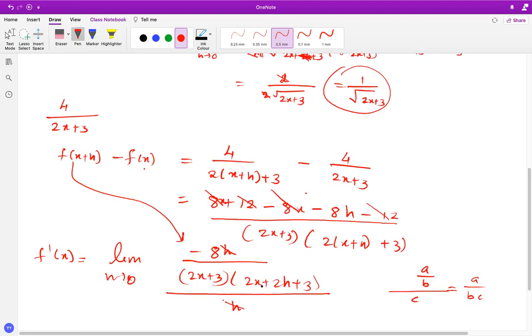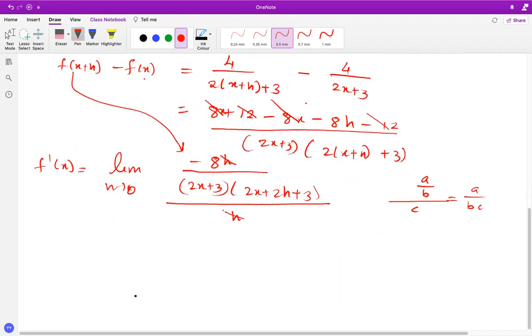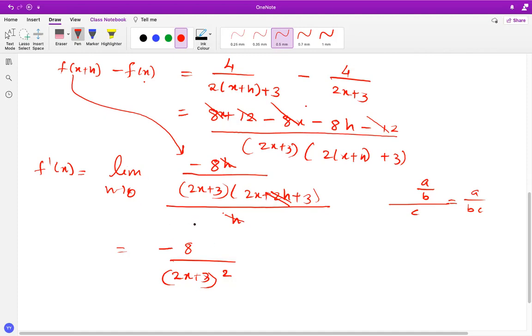Now you plug h as 0. So what we get as final answer is negative 8 over 2x plus 3, the whole square. So because this h is 0, so you get negative 8 over 2x plus 3, the whole square. So this is how you find the derivative using first principle for these two examples.